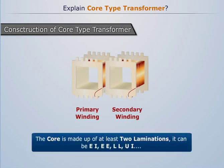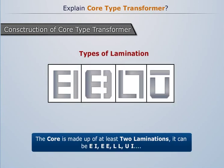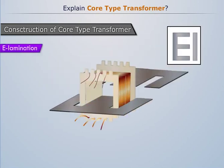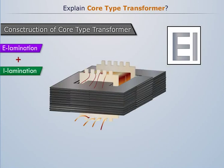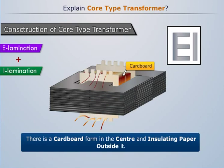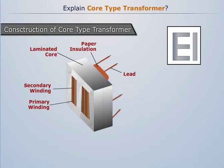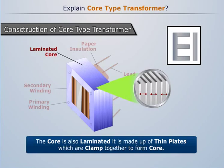The core is made up of at least two laminations; it can be EI, EE, LL, or UI type. In the EI lamination of a core type transformer, there is a cardboard form in the center and insulating paper outside it. The primary windings are placed beside the central core and the secondary windings are just beside the primary. The core is laminated — made up of thin plates which are clamped together to form the core.